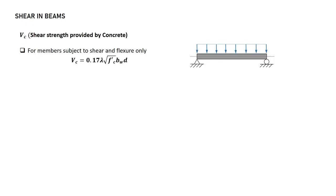Next is the provision for the shear strength provided by the concrete. For members subjected to shear and flexure only, VC is equal to 0.17 lambda square root of F'c bw d.